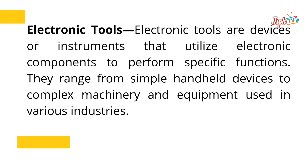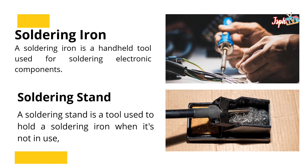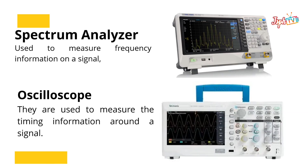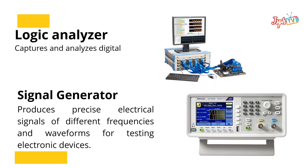Next, the electronic tools. Soldering Iron: Used for soldering electronic components. Soldering Stand: A tool used to hold the soldering iron when it is not in use. Spectrum Analyzer: Used to measure frequency information on a signal. Oscilloscope: Used to measure the timing information around a signal. Logic Analyzer: Captures and analyzes digital signals. Signal Generator: Produces precise electrical signals of different frequencies and waveforms for testing electronic devices.